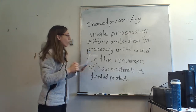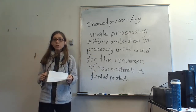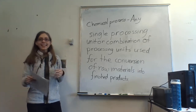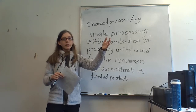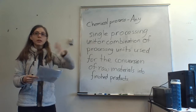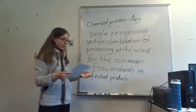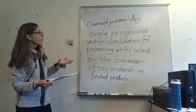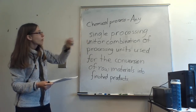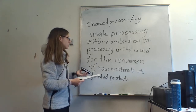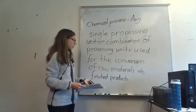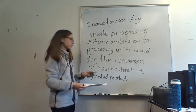You combine all of these units to make big things happen — to transform one product into another at a certain purity. You combine different units or combinations of these units to convert some set of raw materials into some set of finished products, where what your raw materials are and what the finished products are gets specified based on the process.